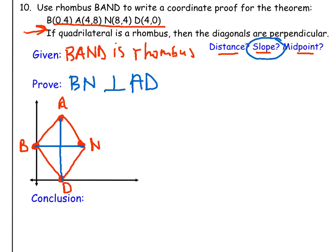So using the slope formula, which is Y2 minus Y1 over X2 minus X1, I am going to first find the slope of BN. Now some of you might be saying well I see that BN is a horizontal line and I already know that horizontal lines have a slope of 0.